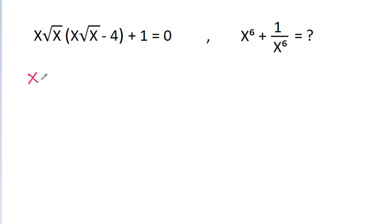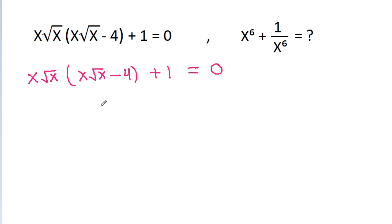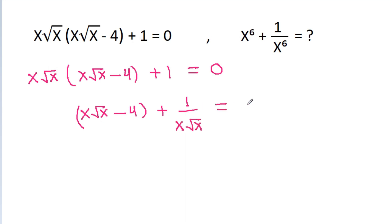We have x√x times (x√x minus 4) minus 1 is equal to 0. If we divide both sides by x√x, then we get x√x minus 4 plus 1 by x√x is equal to 0, which gives us x√x plus 1 by x√x is equal to 4.